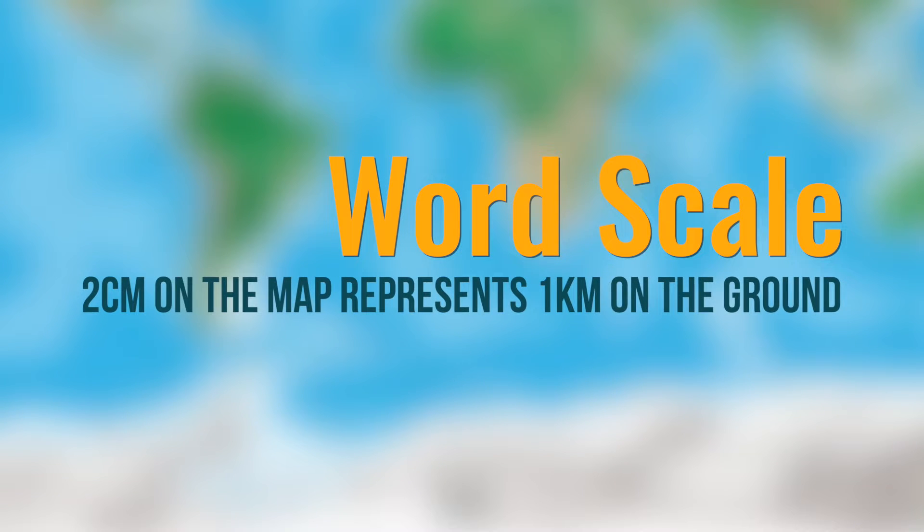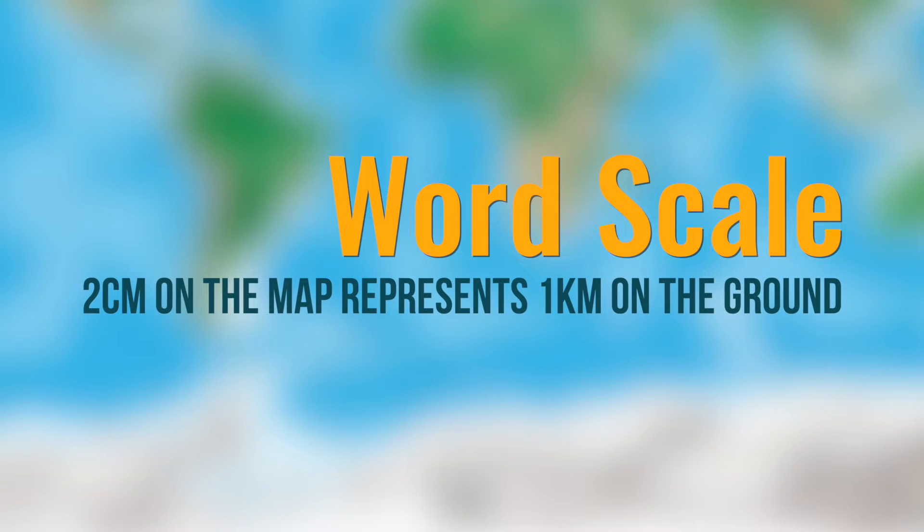The third way is a word scale. This is a word sentence. For example, 2 centimetres on the map represent 1 kilometre on the real ground.